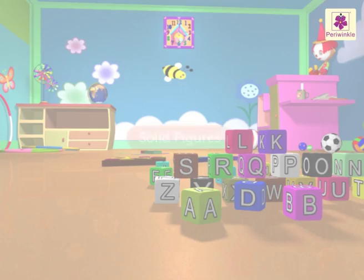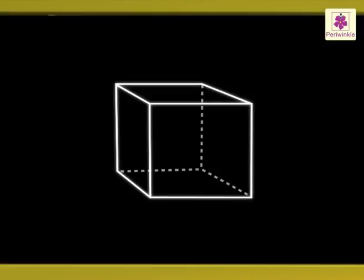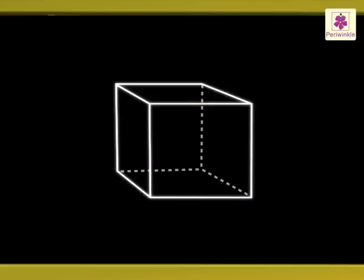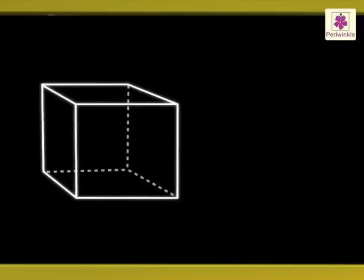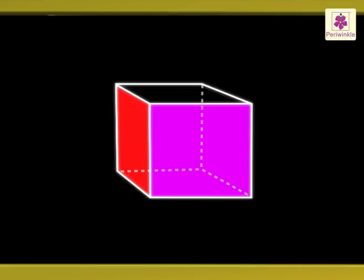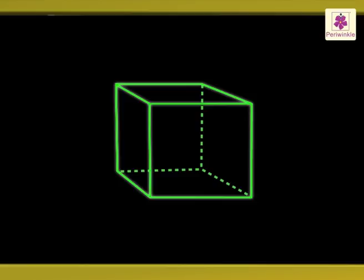Now let us learn about solid figures. Some solid figures have flat surfaces. Each flat surface of a solid figure is called a face. Two faces of a solid figure, like a cube, meet along an edge. The corners where edges meet are called vertices.